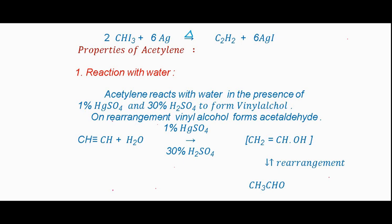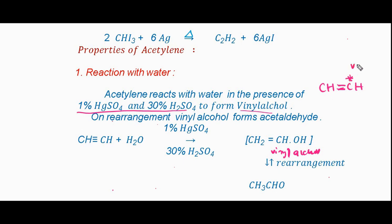The first chemical property is reaction with water. Acetylene reacts with water in the presence of 1% mercury sulfate and 30% H₂SO₄ to form vinyl alcohol. Vinyl means CH₂=CH-; the carbon directly attached to the double bond is called the vinyl carbon. The OH group is present at the vinyl carbon, which is why the product is called vinyl alcohol.